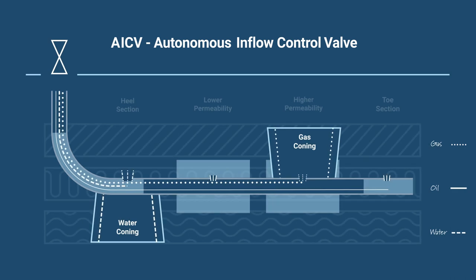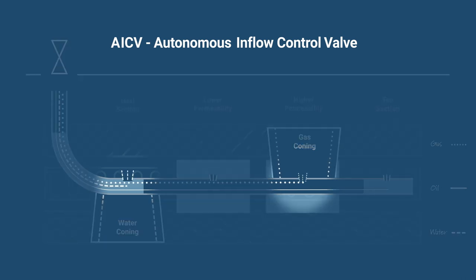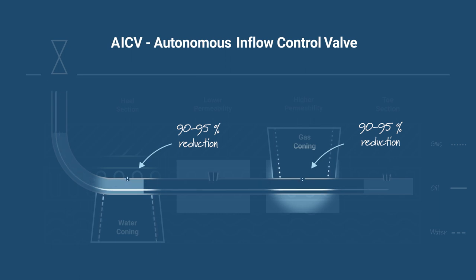Naturally, the AICV delays premature water and gas breakthrough, but most importantly, it was developed to choke back unwanted gas and water by over 90%, in reservoirs ranging from ultra-light to ultra-heavy oil.